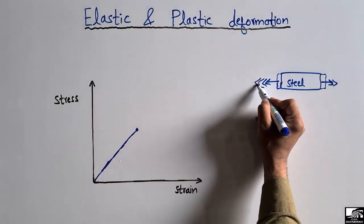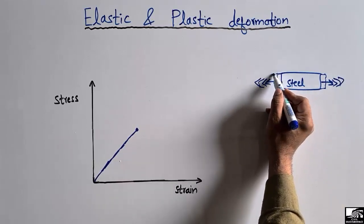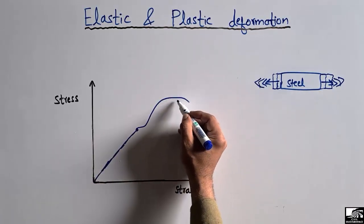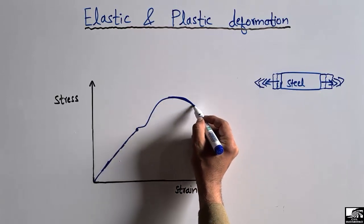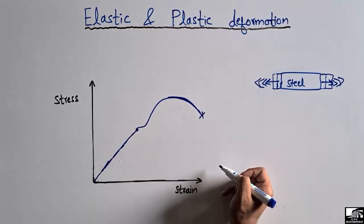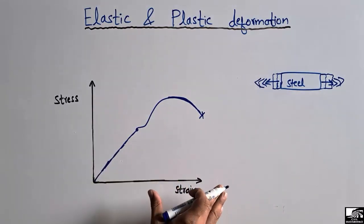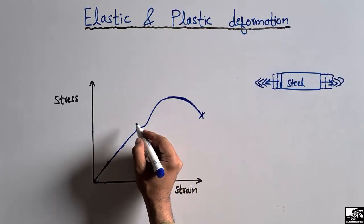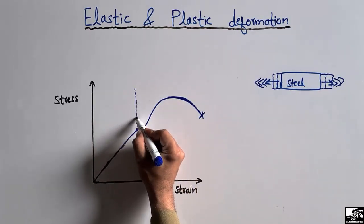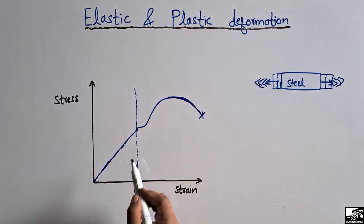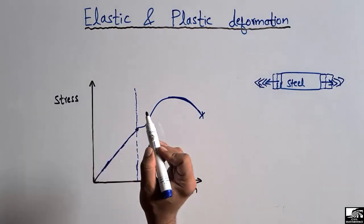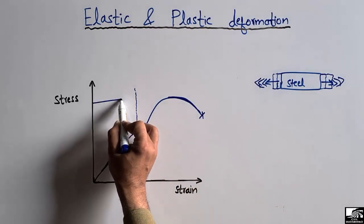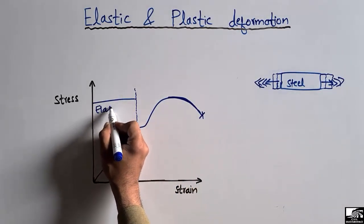If I increase the load further, the stresses and strains will continue to increase in both directions until the material fractures. This is the general stress-strain diagram for steel. Now if I remove the load beyond this point, the material will not come back to its original position. Up to the elastic limit, the material was able to return to its original position by removing the load.